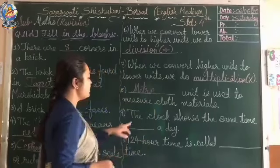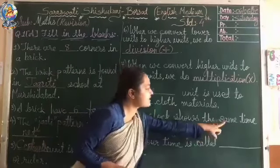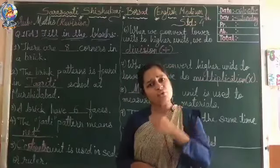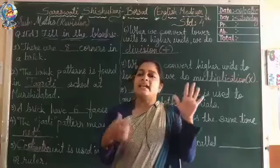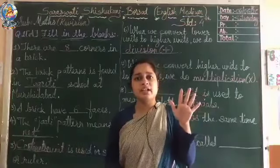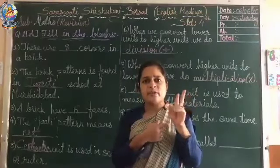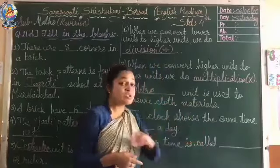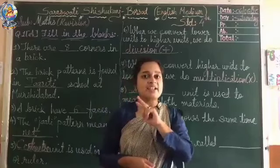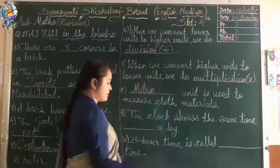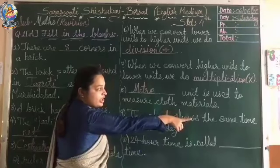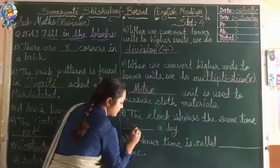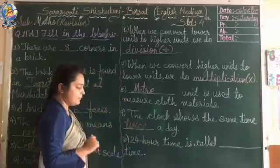Next question: the clock shows the same time blank a day. In the morning when it is five o'clock it shows the time, and in the evening also when it is five o'clock it shows the time. So two times it is showing the time correctly. The answer is 'twice' — T-W-I-C-E. The clock shows the same time twice a day.